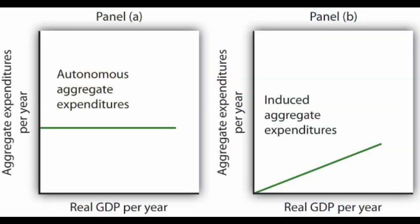To get to any of that, we need to understand the consumption function. The constant discussed in the last video is back, but now we'll call it autonomous expenditures. It tells us where the AE curve's intercept lies on the y-axis. It's autonomous because the constant in the consumption function represents the base level of consumption households have to do at least to survive, regardless of their income.